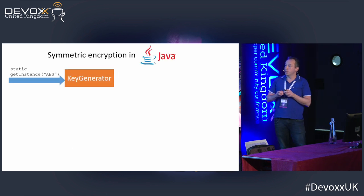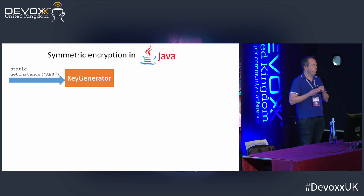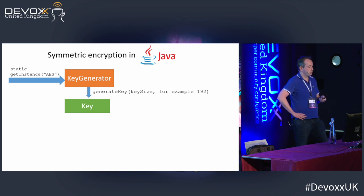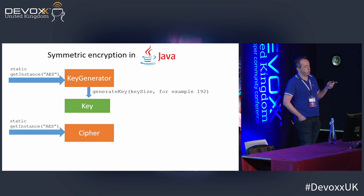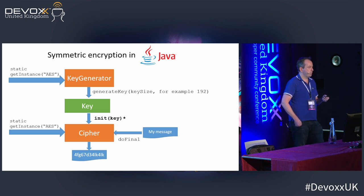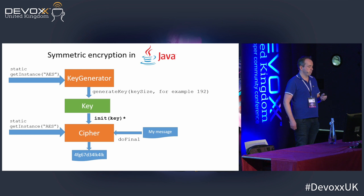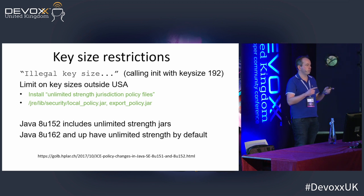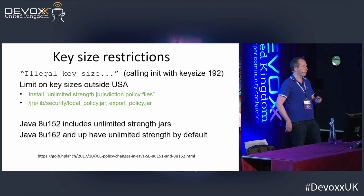Here's how AES is implemented in Java. There is a class called KeyGenerator with a static getInstance method. You provide the algorithm and can call init with a specific key size, for example 192 bits, then call generateKey. Then you use another class called Cipher, which represents the algorithm. You call getInstance with 'AES', initialize it with a key, have a message, and execute the doFinal method to do the encryption. Out comes the ciphertext. The illegal key size issue was a problem before recent versions of Java 8, but it's been removed and you can use whatever key size you want.